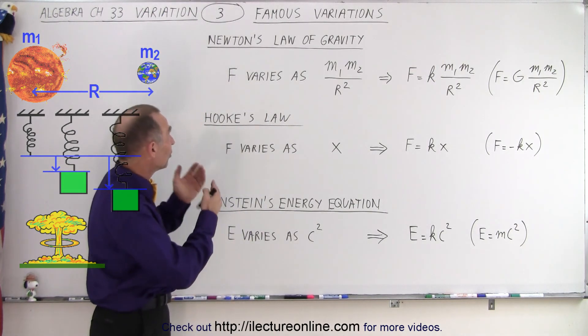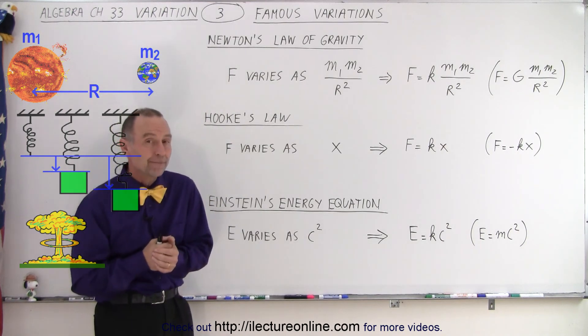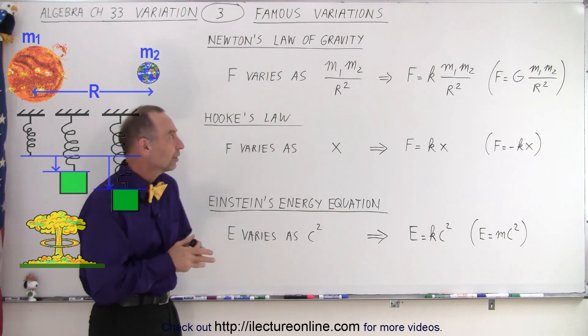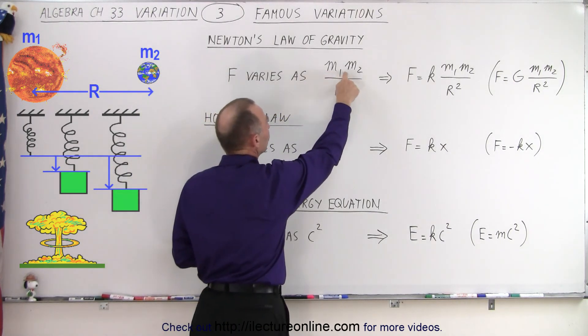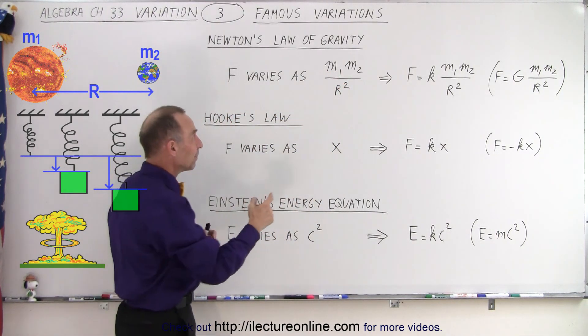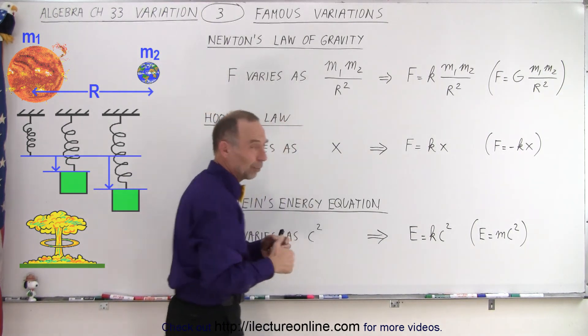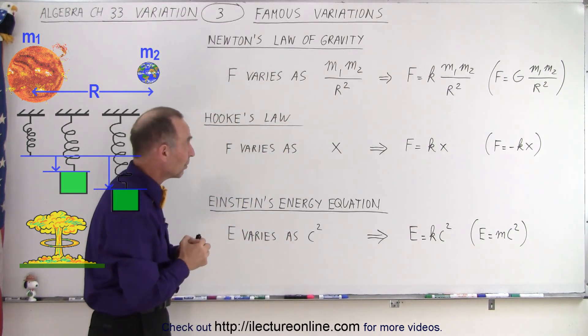The first one is Newton's Law of Gravity. Newton discovered that the force of gravity varies as the product of the two masses of the two objects involved, divided by the distance between them squared. We use the letter R for that distance squared.